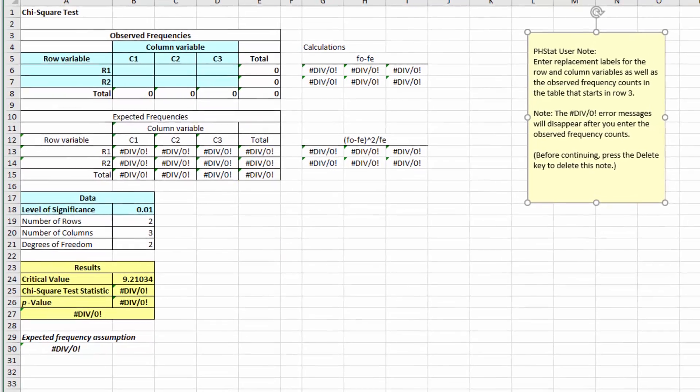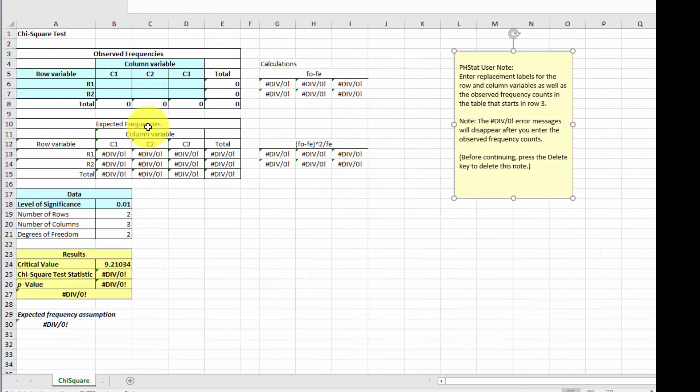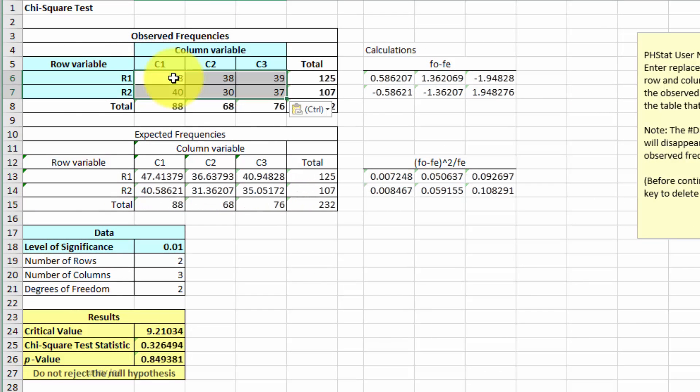In Excel, what we can do is just highlight those cells, right-click, copy, go over here to the chi-square, enter the first cell, control-V. So we've put our data into this prearranged shell that PHStat makes for us.